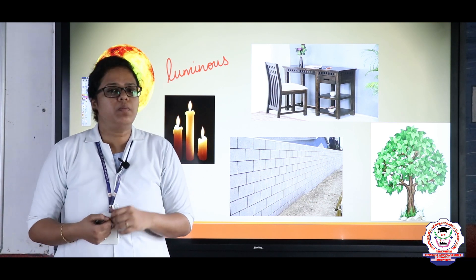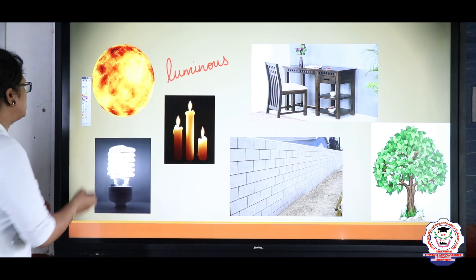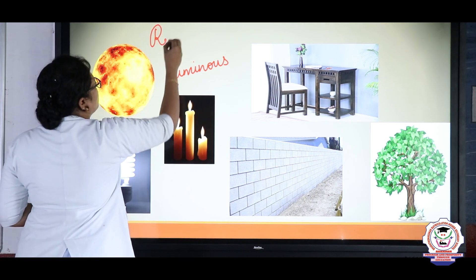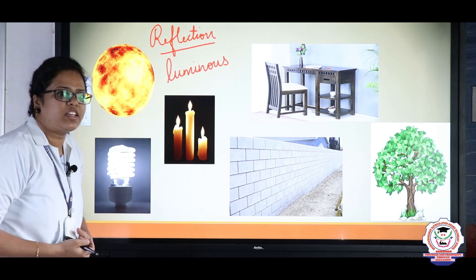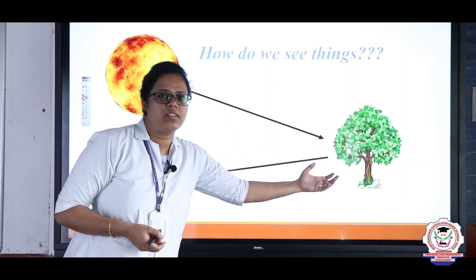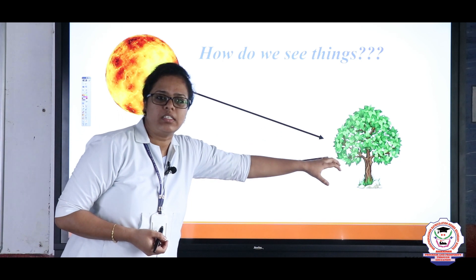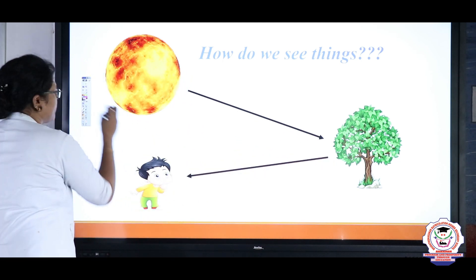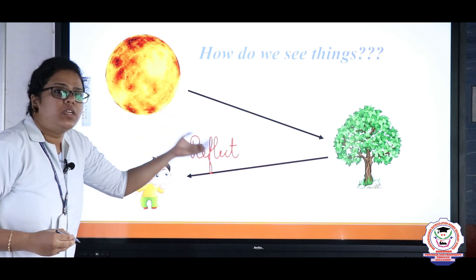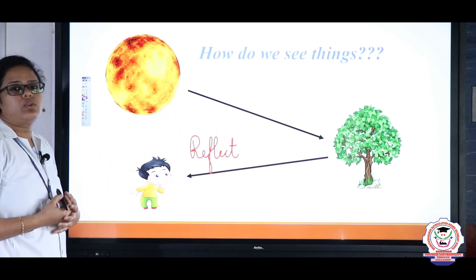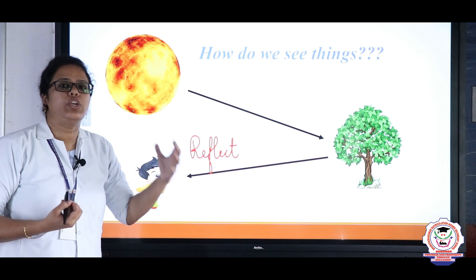Just hold on — if we are not able to generate light, then how can we see non-luminous objects? This is due to the reflection of light. The non-luminous object gets light from the luminous object. When the light from the luminous object falls on its surface, it reflects the light to our eyes. So the non-luminous object gets light from the luminous object and reflects it to our eyes. This is basically how we see non-luminous objects — through the reflection of light.